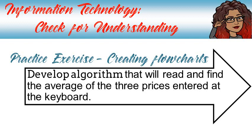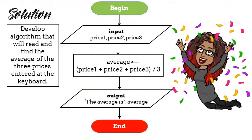Let's look at the solution. Now the solution says that we, of course, begin with the terminator. And what is our input? We want to input three prices. So we'll input price one, price two, and price three.